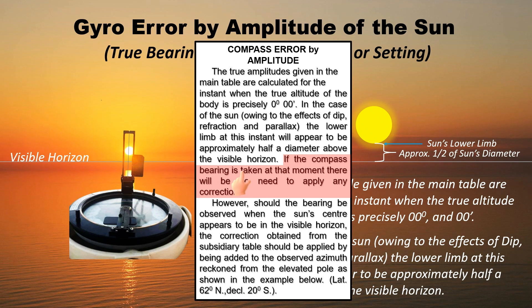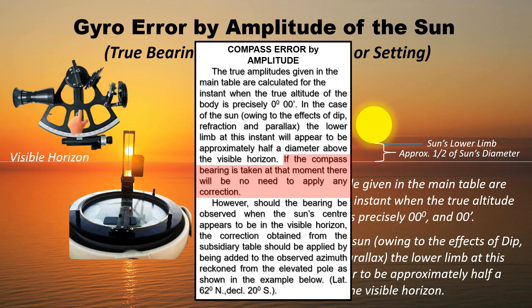If the compass bearing is taken at this moment, there will be no need to apply any correction. In practice, when taking the compass bearing of the sun, using a sextant to determine the sun's true altitude at 0 degree 0 minute is not necessary. Approximating the sun's lower limb as half its diameter above the visible horizon will be enough; a small inaccuracy is negligible.